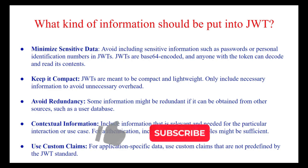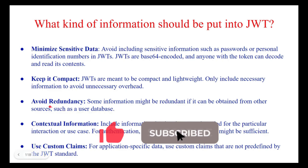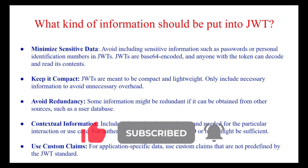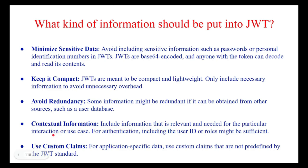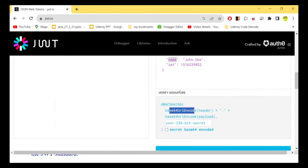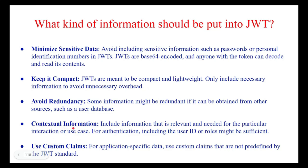Keep the JWT compact — it should be lightweight and only contain necessary information, as there is a limit to the claims you can add. Avoid redundancy: information that can be retrieved from the database, such as username or user details, does not need to be included — you can just pass the user ID. Only include information relevant to the particular interaction; for authentication, you typically just need the user ID and roles. You can also add custom claims beyond the standard JWT specification.